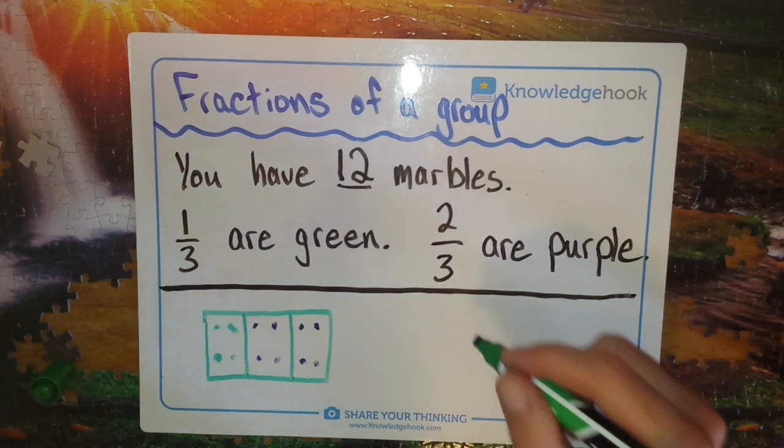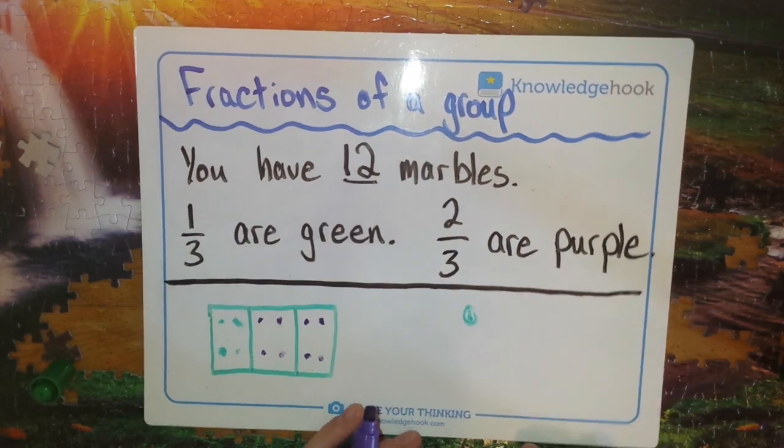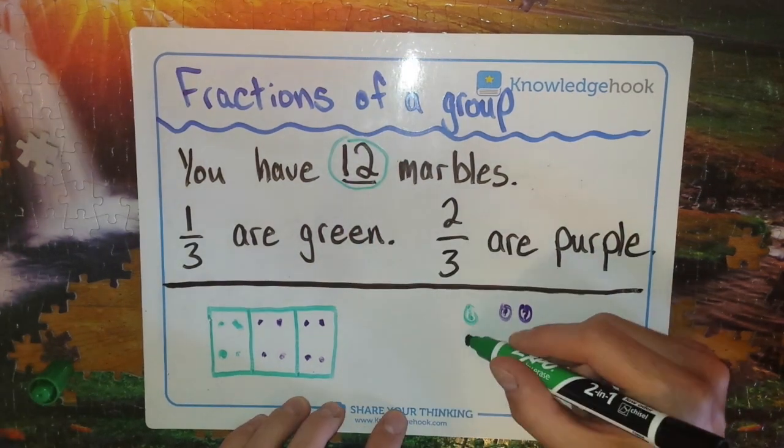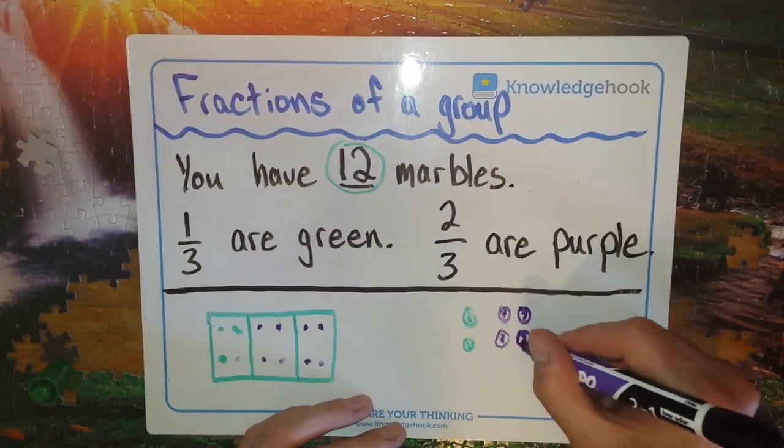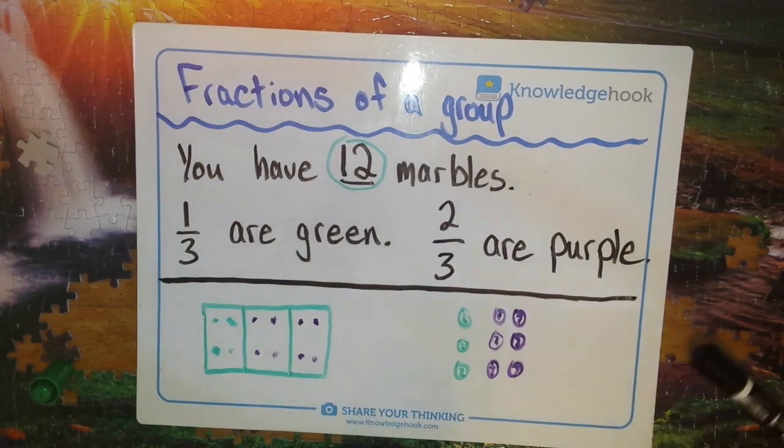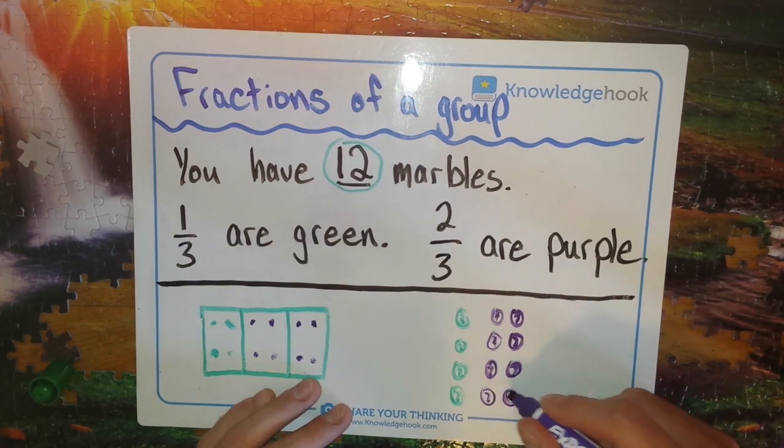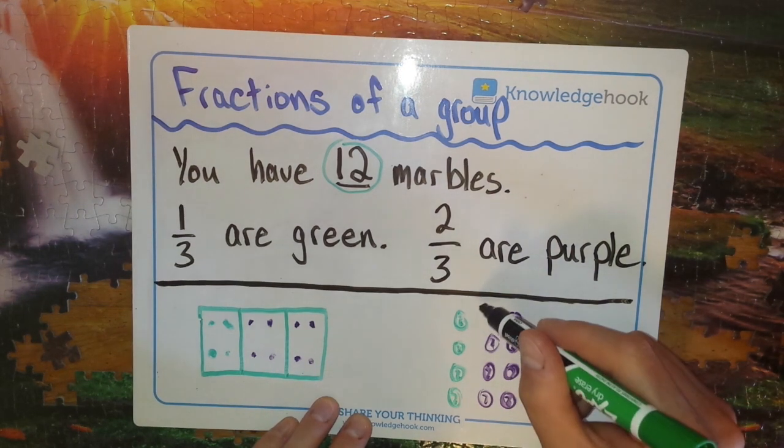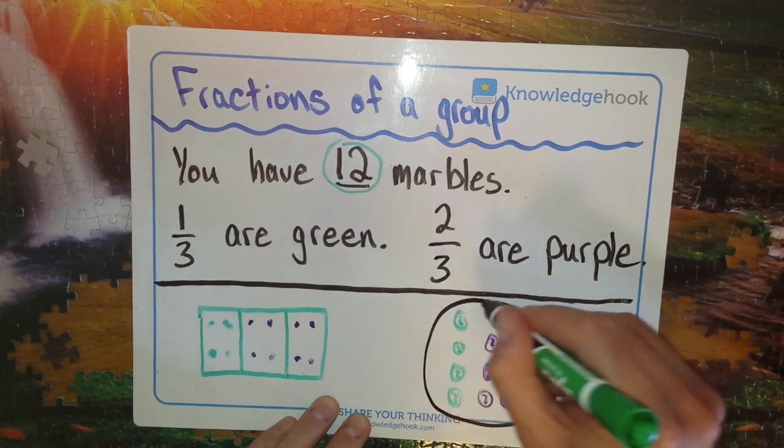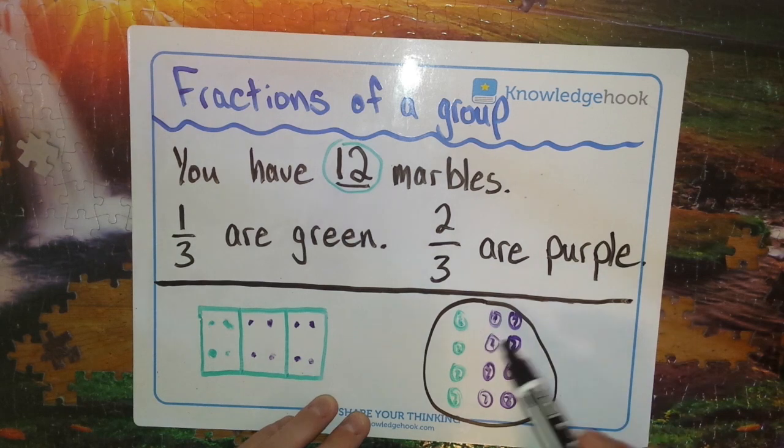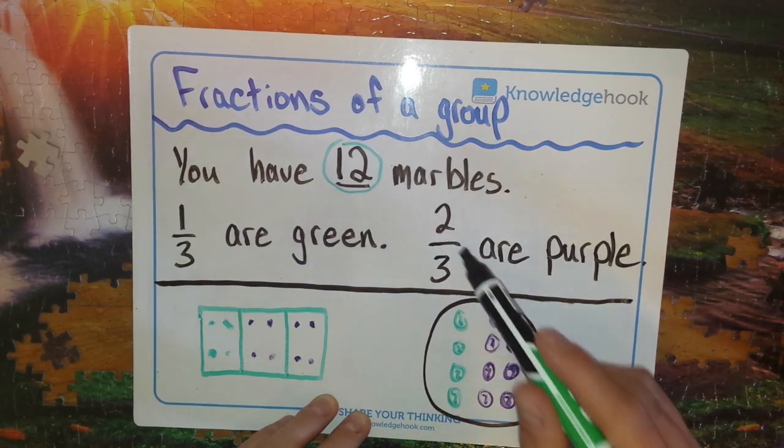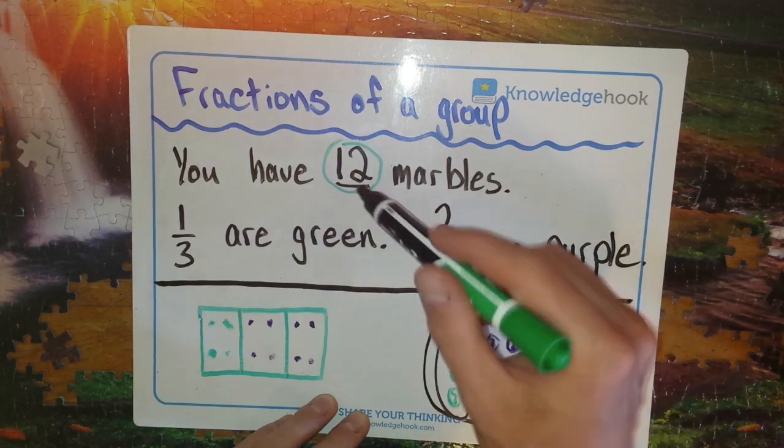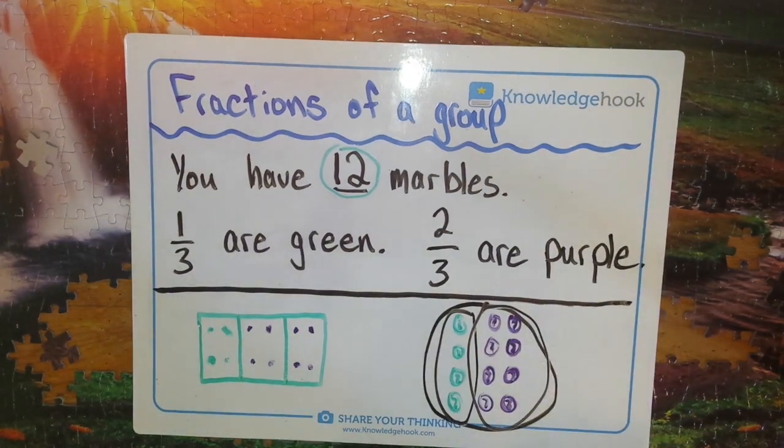So we could just draw them out. We could say okay, we know for every green one there's gonna be two purple, so green, purple, purple. And when we've finished that, we end up with the same number, so we have twelve marbles all together. And for every one in three marbles there's a green one, and for every two in three there's a purple one, and all the way down we end up with four green and eight purple, and we have the correct number of marbles, which is twelve. Each is in an equal group, so that's that.